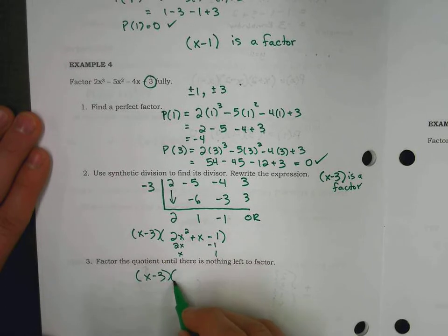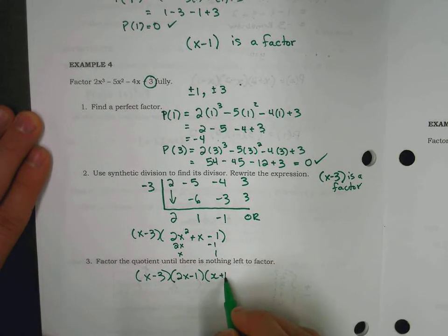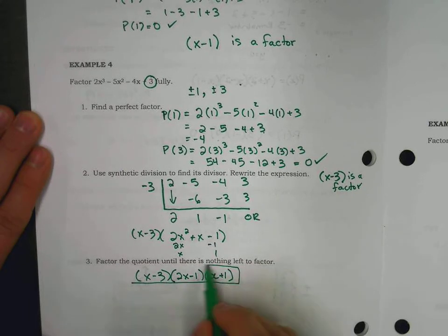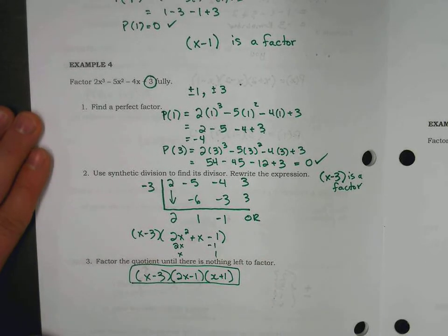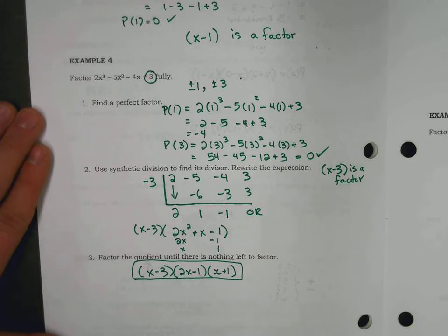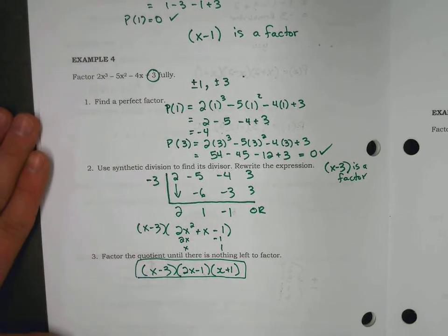x minus 3, 2x minus 1, x plus 1, and for the very first time, we factored a cubic function from start to finish without being told one of the factors.